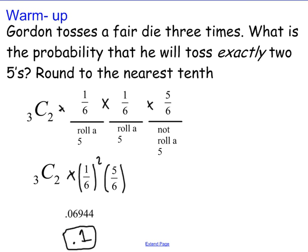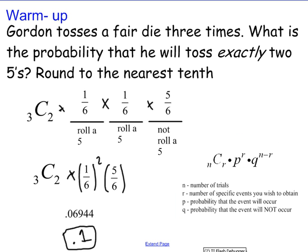Okay, so if you just wanted to use the formula, that's the formula. N stands for the number of trials. R is the number of specific events you wish to obtain. P is the probability that the event will occur. And Q is the probability that the event will not occur.